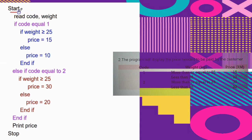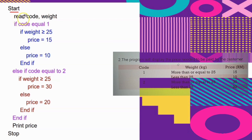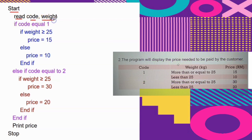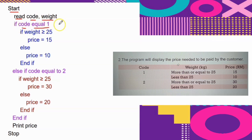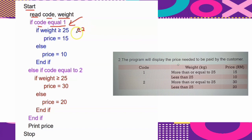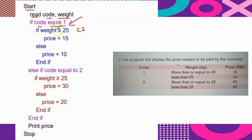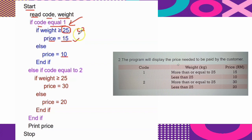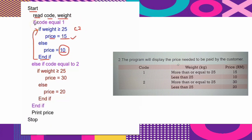Before writing the pseudocode, start with START followed by the input — READ code and weight. If code is equal to 1, the outer condition is true, so the computer checks the second (inner) condition: if weight is greater than or equal to 25, price equals 15 ringgit; else price equals 10 ringgit. Write END IF to terminate this IF block. Remember: if the first condition is true and the second condition is false, price equals 10 ringgit.